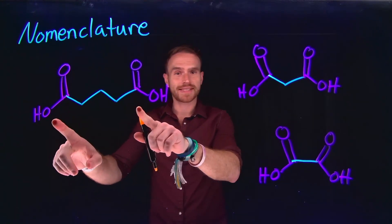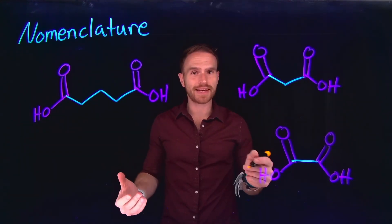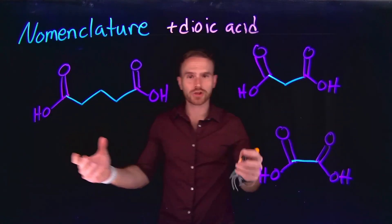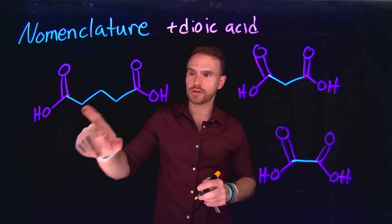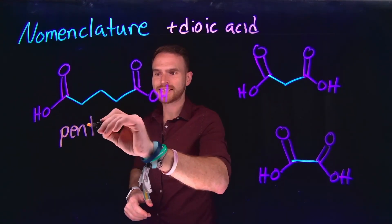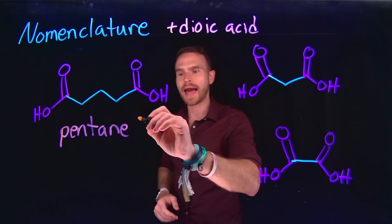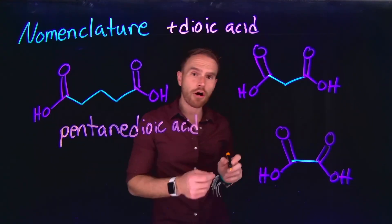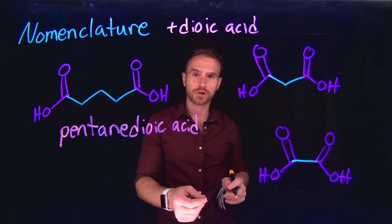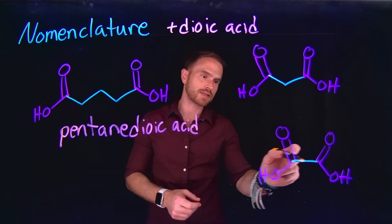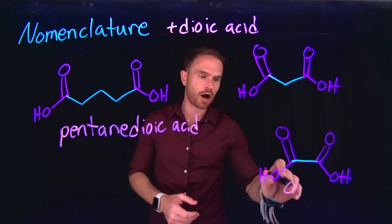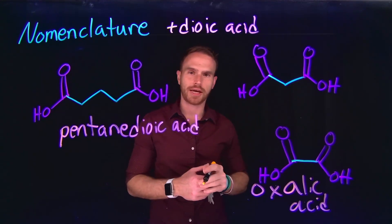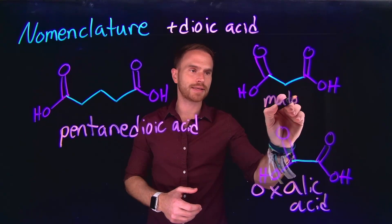Diacids are molecules that contain two carboxyl groups. The difference is that we leave the '-e' ending and add '-dioic acid' to name them. For example, a five-carbon chain — pentane — becomes pentanedioic acid. Some common diacids useful to commit to memory include oxalic acid, a two-carbon dioic acid, and malonic acid, a three-carbon chain diacid. IUPAC accepts both the formal '-dioic acid' names and these common acid names.